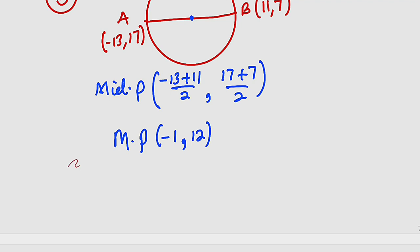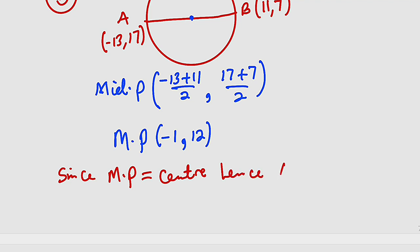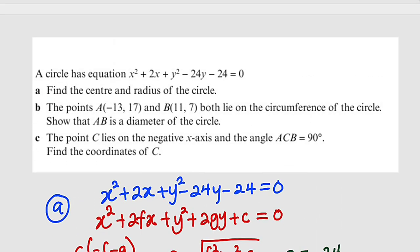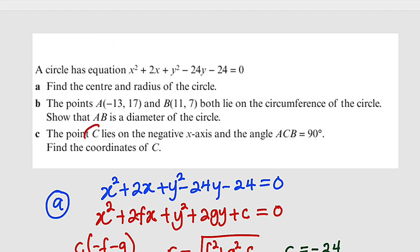Since the midpoint of AB equals the center of the circle, we conclude that AB is indeed a diameter. Now let us move to the last question: the point C lies on the negative x-axis, and the angle ACB is equal to 90 degrees. We are asked to find the coordinates of C.